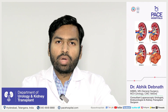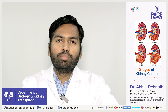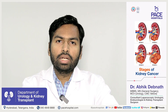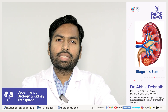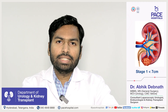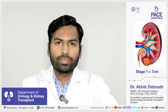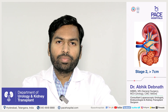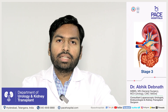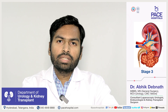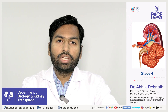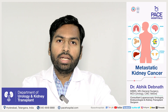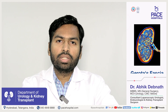The staging includes stage 1, 2, 3 and 4. It mostly depends on the size and local invasion of the cancer, as well as spread to local lymph nodes and other organs. If it is confined to the kidney and less than 7 centimeters, it is stage 1. Stage 2 means more than 7 centimeters but confined to the kidney. Stage 3 means invasion of the sinus, collecting system, or vessels. Stage 4 includes spread to other body parts (metastatic) or spread outside Gerota's fascia.